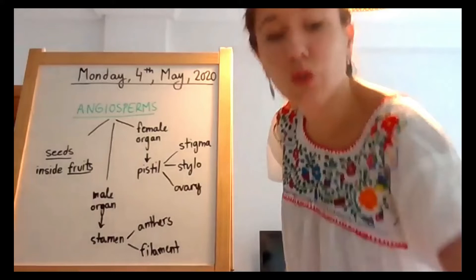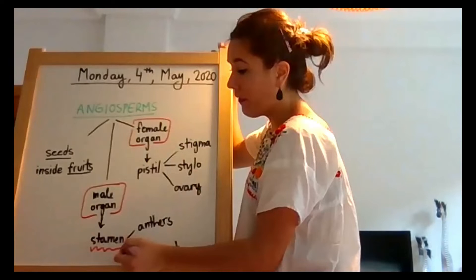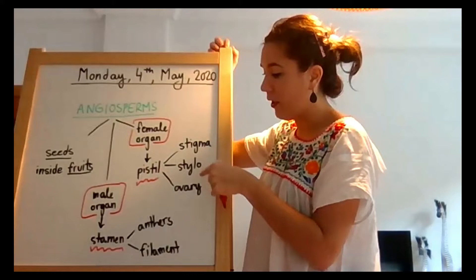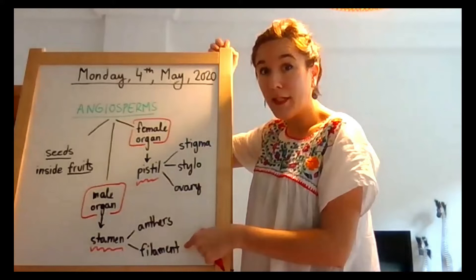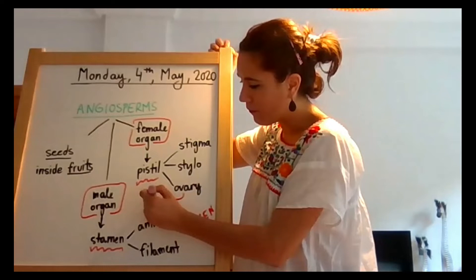In angiosperms we find two very important parts: the male organ and the female organ. The male organ is called the stamen; the female organ is called the pistil. The pistil has the stigma, the style, and the ovary. The stamen has anthers and filaments — the anthers produce pollen, and the ovaries produce ovules.